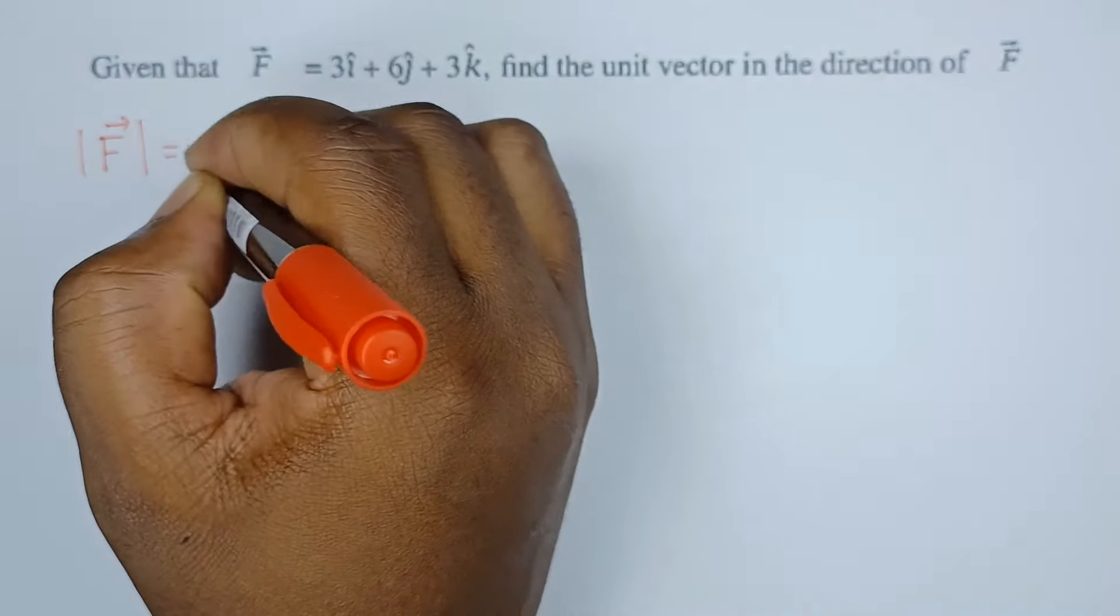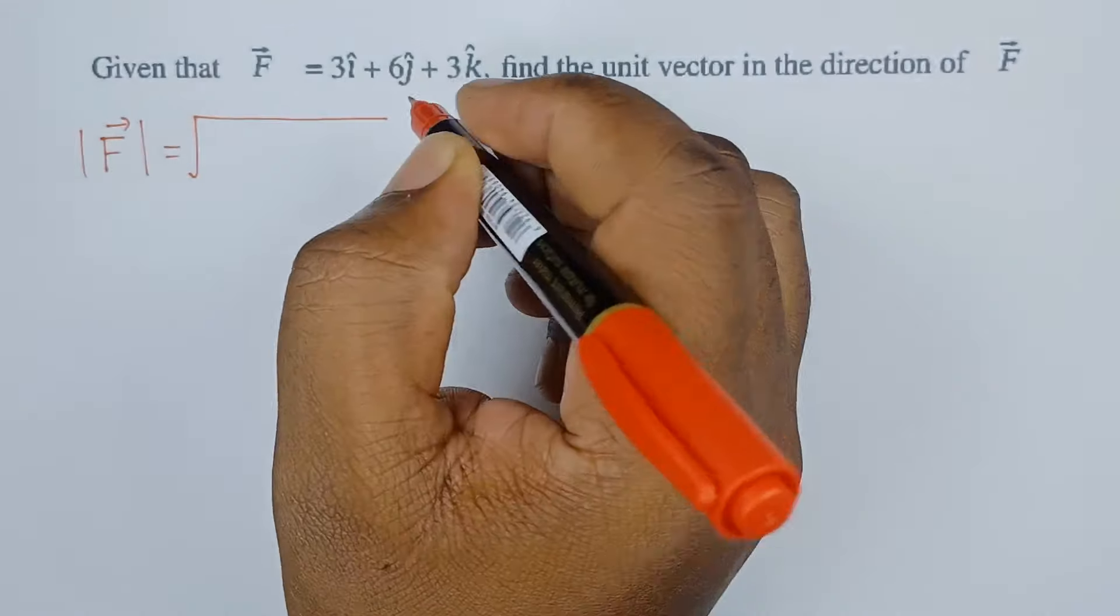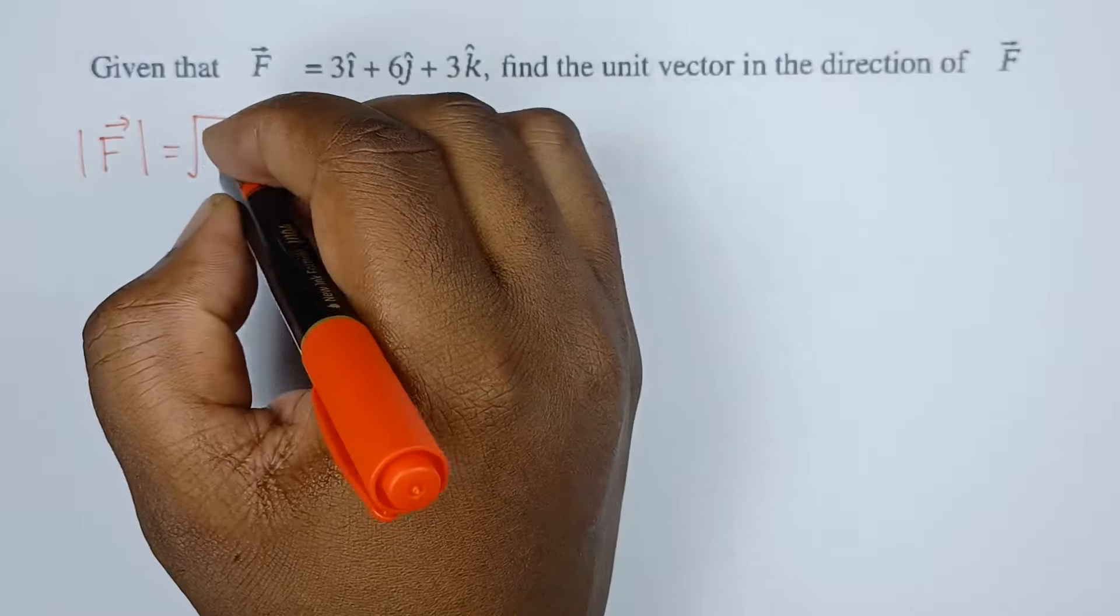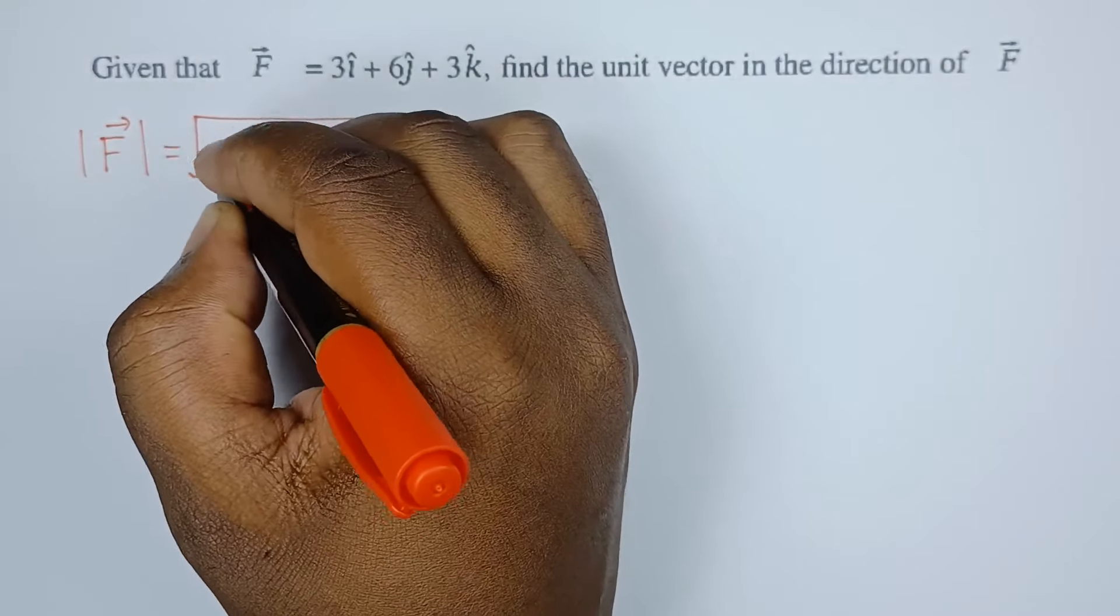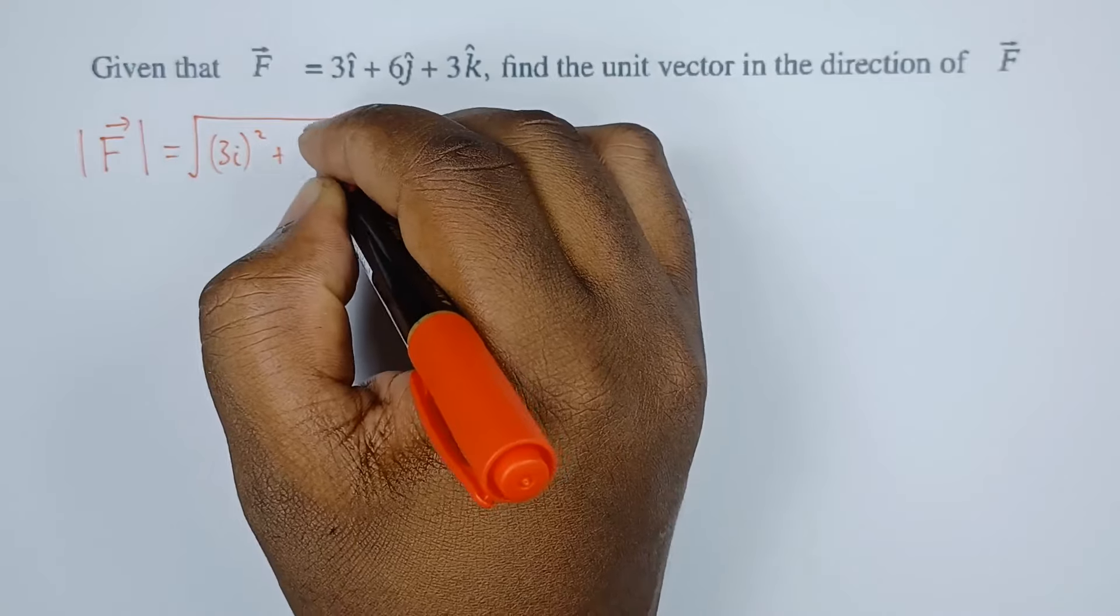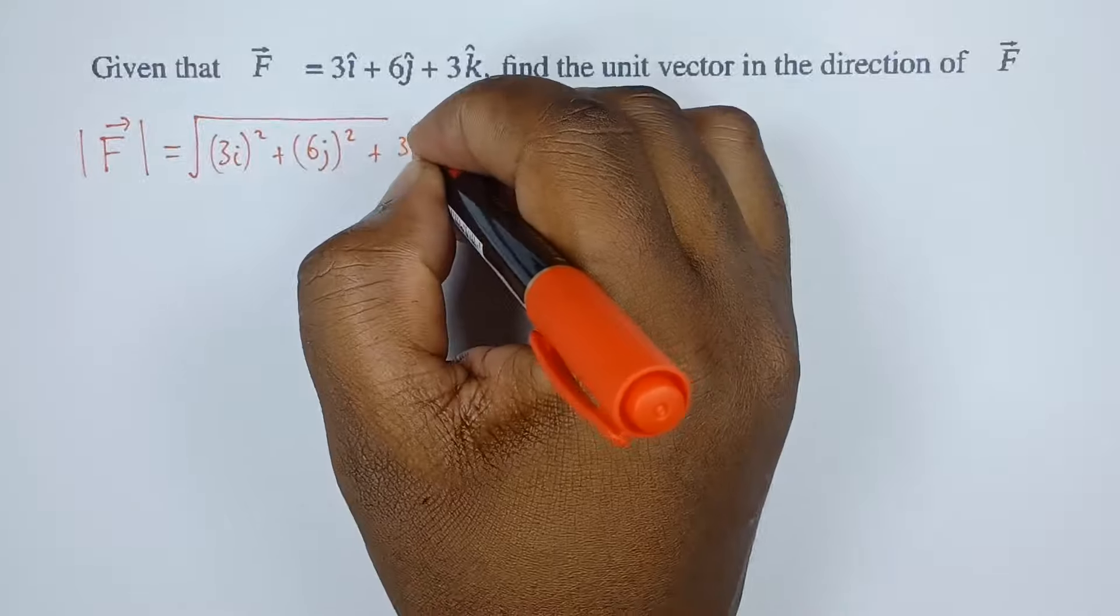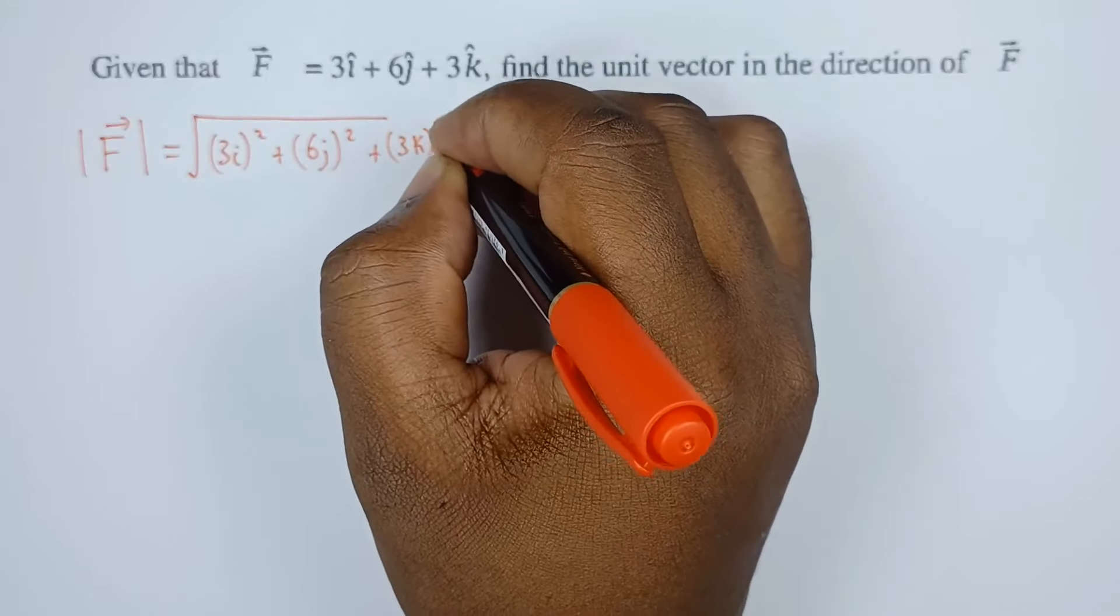The magnitude is found by the square root of the square of each of these components. So we have 3i squared plus 6j squared plus 3k squared.